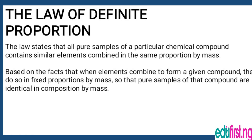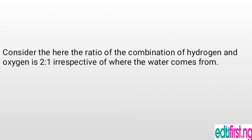The second law is the law of definite proportion. This law states that all pure samples of a particular chemical compound contain the same elements combined in the same proportion by mass. When elements combine to form a compound, they do so in fixed proportions, so that pure samples of that compound are identical in composition by mass. For example, hydrogen combines with oxygen in the ratio of 2 to 1 — two atoms of hydrogen with one atom of oxygen — to give water, regardless of the source.